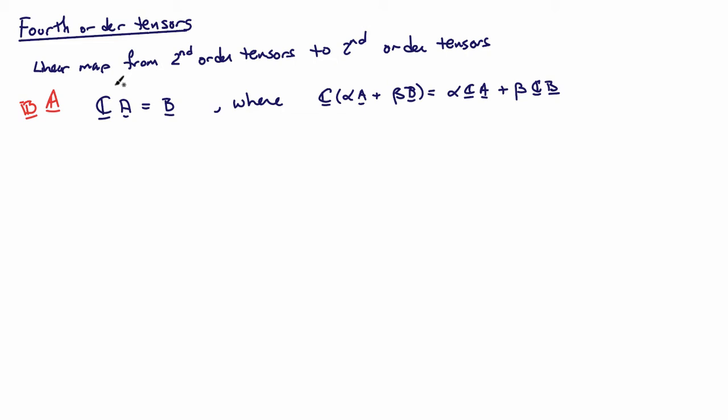So here I have a fourth-order tensor C, and it acts on a second-order tensor A, producing a second-order tensor B. The property that C has to have is that it's linear. So if I apply it to a linear combination of second-order tensors — where alpha and beta are real numbers — I get the linear combination of C acting on A and B separately, then multiplying by the scalars and adding. It's the exact same definition we had for second-order tensors.